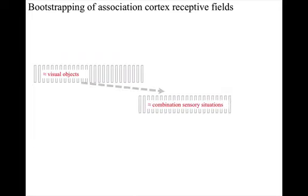The areas that discriminate between complex sensory situations will also have genetic biases on the areas from which they receive inputs and the thresholds for receptive field detections, which again will tend to result in receptive fields that can discriminate between specific types of circumstances.